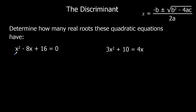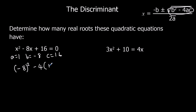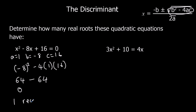For the first one, a is 1, b is negative 8, and c is 16. The discriminant is b squared minus 4ac. Substituting in: negative 8 squared is positive 64, minus 4 times 1 times 16 is 64. So 64 take away 64 is zero. b squared minus 4ac equals zero, so it's got one real root or one solution.